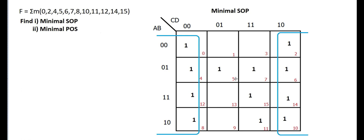Our aim should be in this order: first check if an octet is possible, then look for a quad, then a pair, and finally a single cell. Now these two cells are adjacent, but these ones are already grouped. The already-grouped ones are helping us to form a quad, so we can make another quad here.